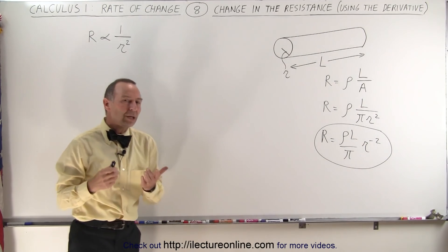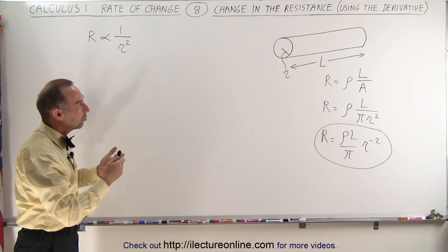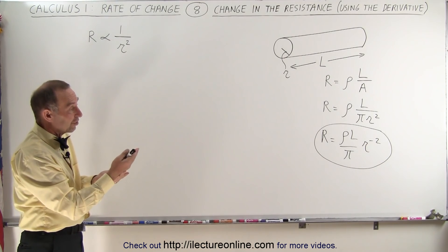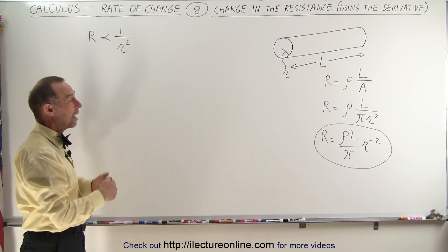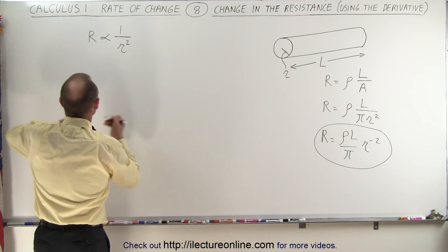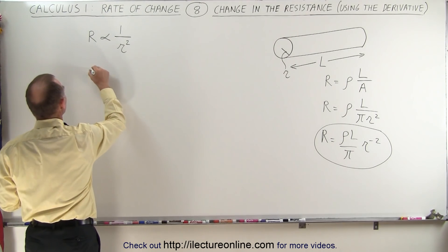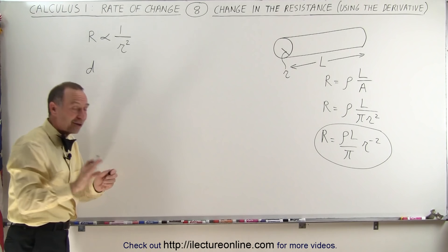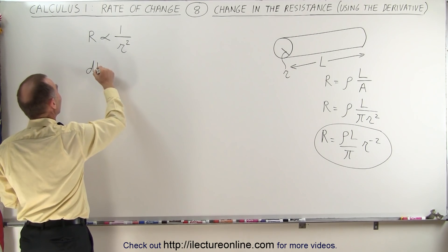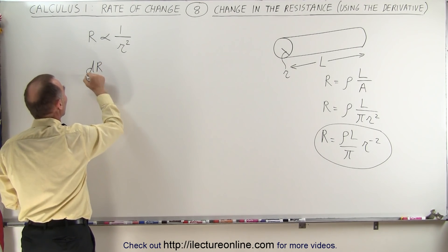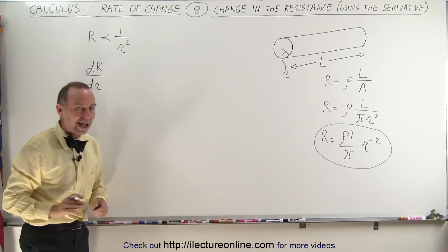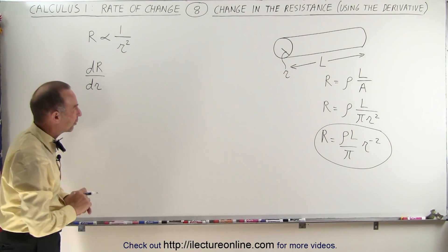Now, if you want to come up with an equation that shows us how much the resistance is changing when, for example, the radius is changing, how do we do that? Well, we start again with the derivative. We find dR/dr — the derivative of the resistance with respect to the radius, not with respect to time, but with respect to the radius.